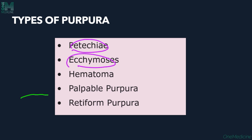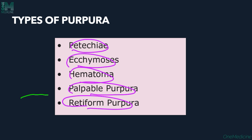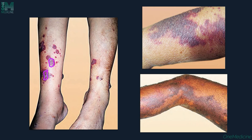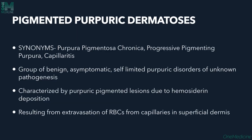Hematomas are subcutaneous collections of blood. Palpable purpura is raised above the skin surface and can be felt — most commonly seen in Henoch-Schönlein purpura. Retiform purpura is another distinct type. Non-blanchability is a key feature that confirms the purpuric nature of all these lesions.